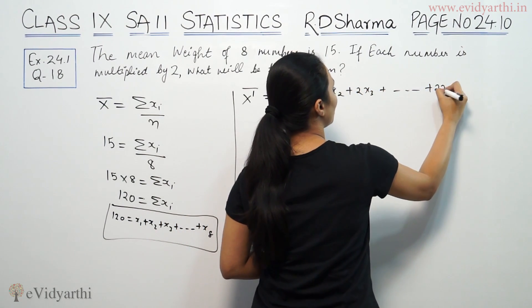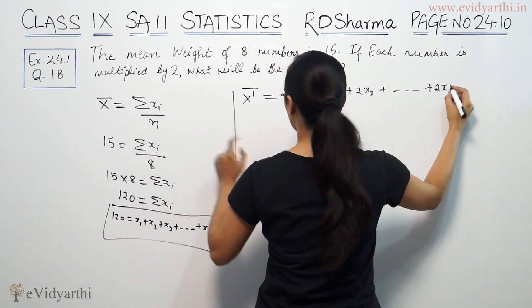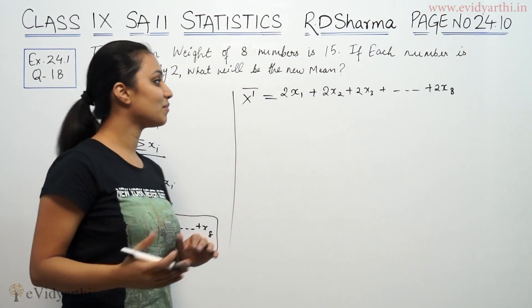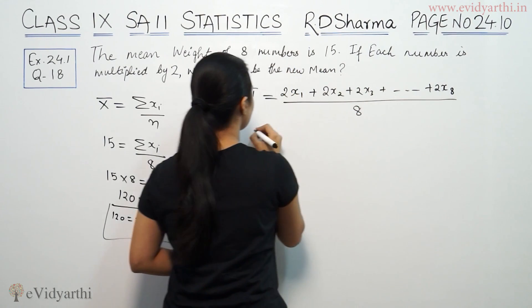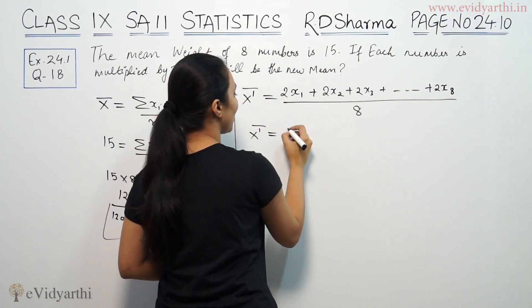New mean will be equal to sum of observations. Each term is multiplied by 2 upon number of observations which is 8. Now, we have all these common numbers.